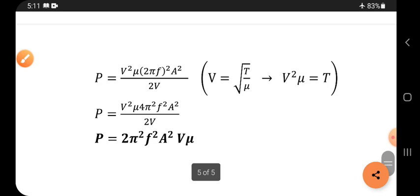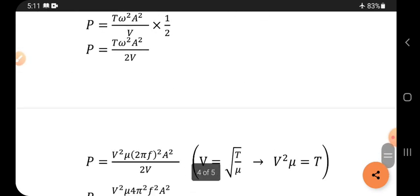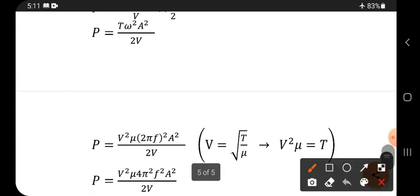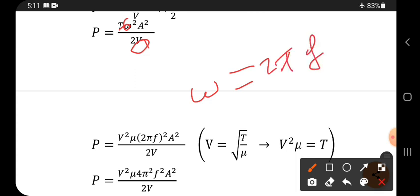So this is the formula. Now what I'm doing: this v I am replacing, and omega. Omega value everybody knows: ω = 2πf. And v value is v = √(T/μ). From this, T = v²μ.